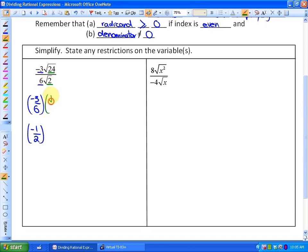That would end up being the square root of 12 over the square root of 1. And the square root of 1 is itself, so you don't really need that there. So in simplest form, this would be negative root 12 over 2.